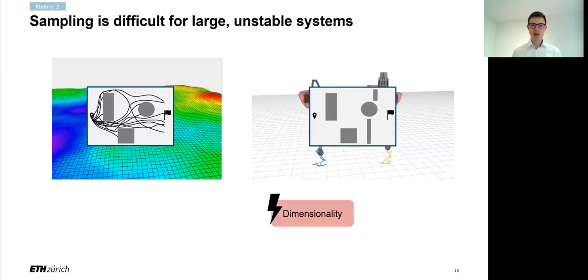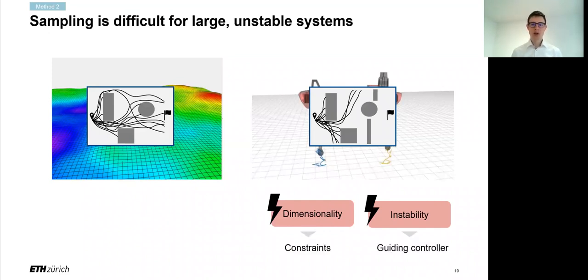The second problem is instability, which makes the samples veer off to the sides rather than proceeding forward. And both of these lead to a high variance estimation of the Monte Carlo sampling, which makes sampling the system so hard. But there's good news, because we've developed a solution to both. We use constraints and guiding controls to tackle those problems. Now, I'll spend the next few slides to explain these concepts. Let me begin with the dimensionality issue.